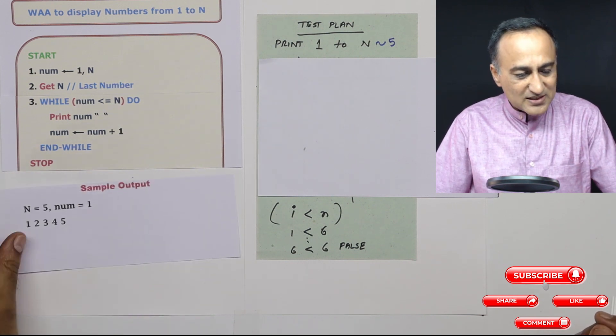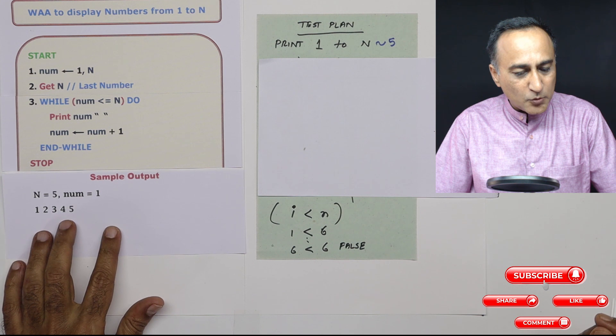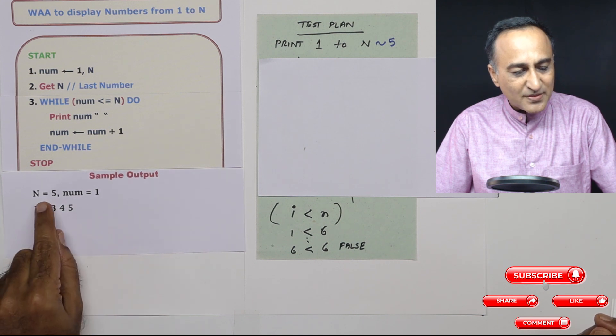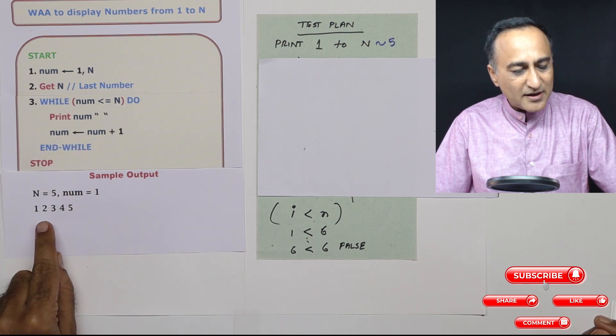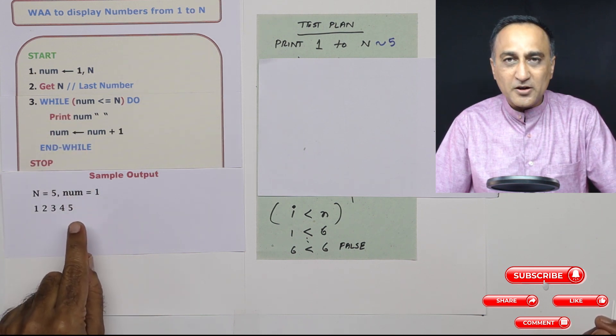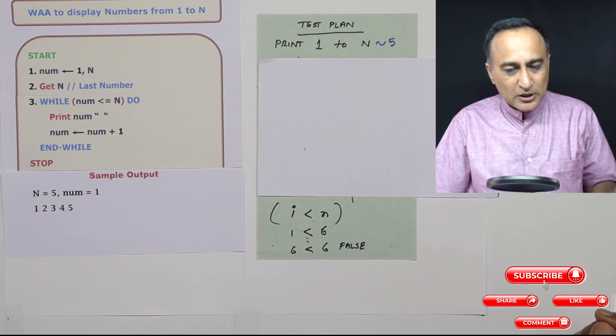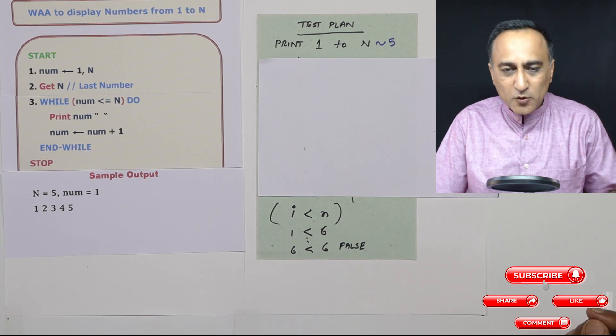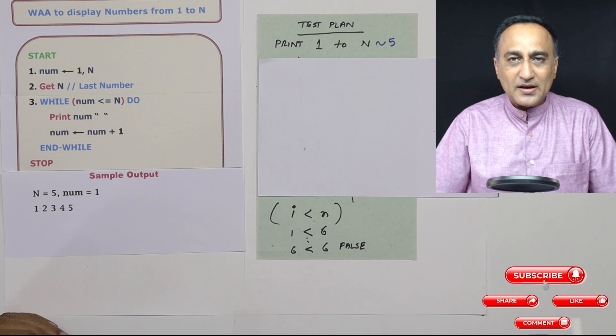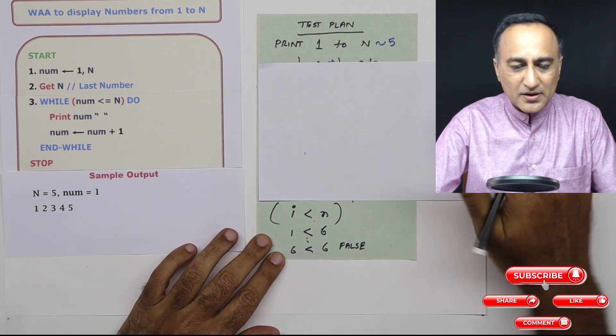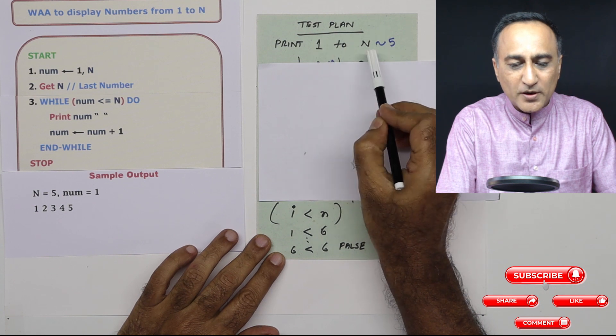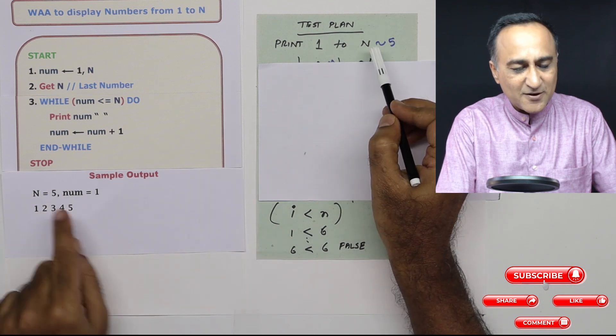So if you run this for a sample input output something like this, if you give an input of n is equal to five and number initial value is one, you will get output like this on your printer or on your screen. Now, as usual, we do not trust our logic till we do a dry run or a test plan. So what I am going to do here is I am going to try to print from one to n assuming n is just five.